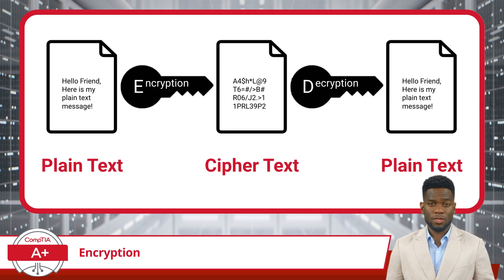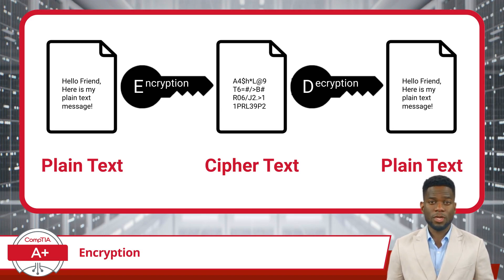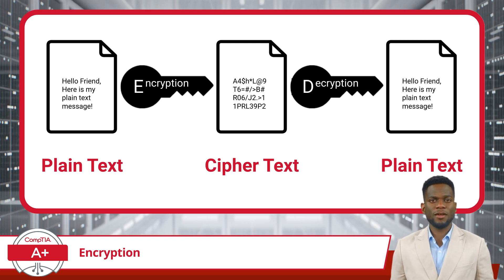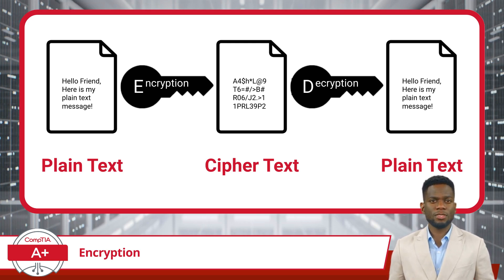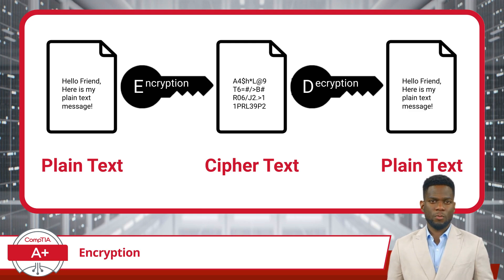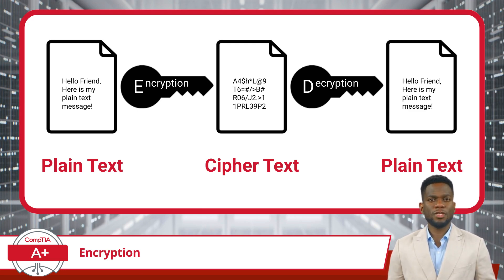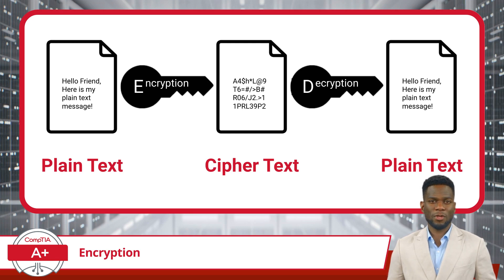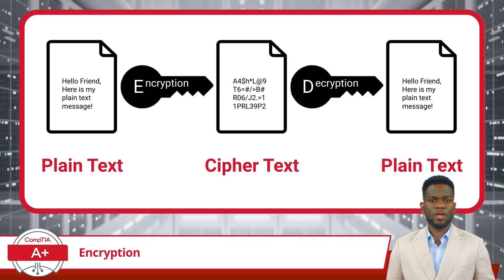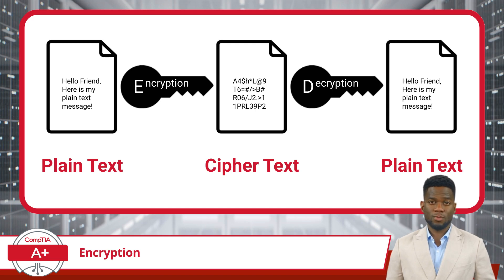The primary purpose of this scrambling is to protect the data's integrity and confidentiality. Without the correct decryption key or method — which acts as a sort of digital password or blueprint to reverse the encryption — the ciphertext remains a puzzling array of characters, numbers, and symbols. Only those possessing the right key can revert the ciphertext back to its original plain text form.